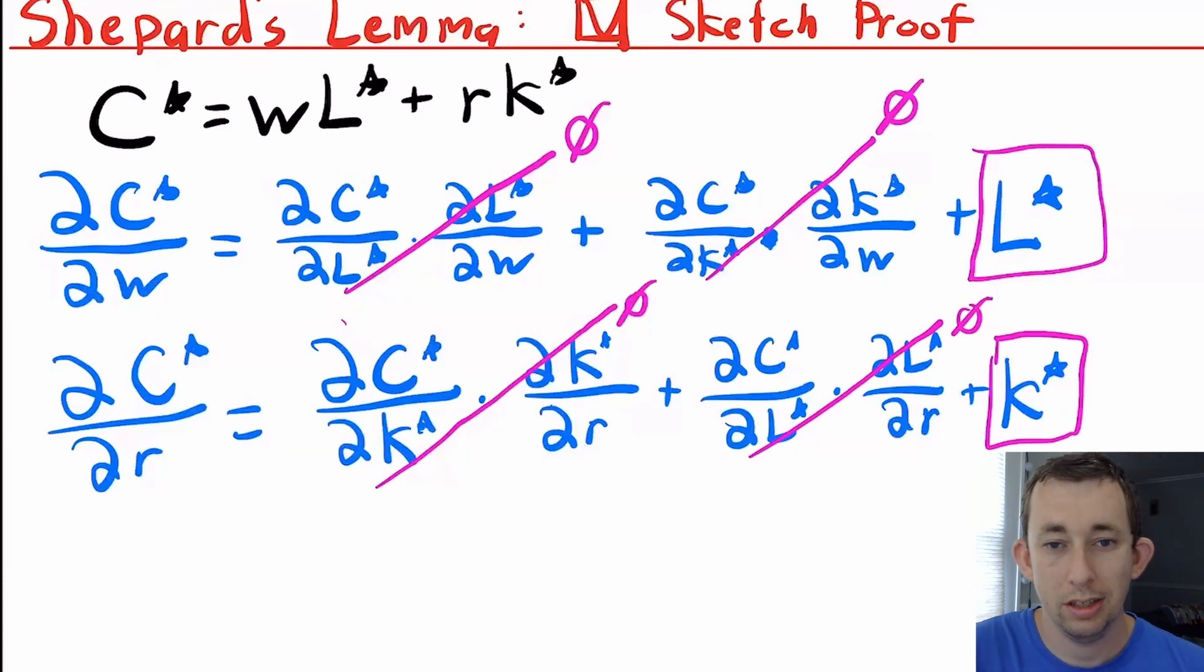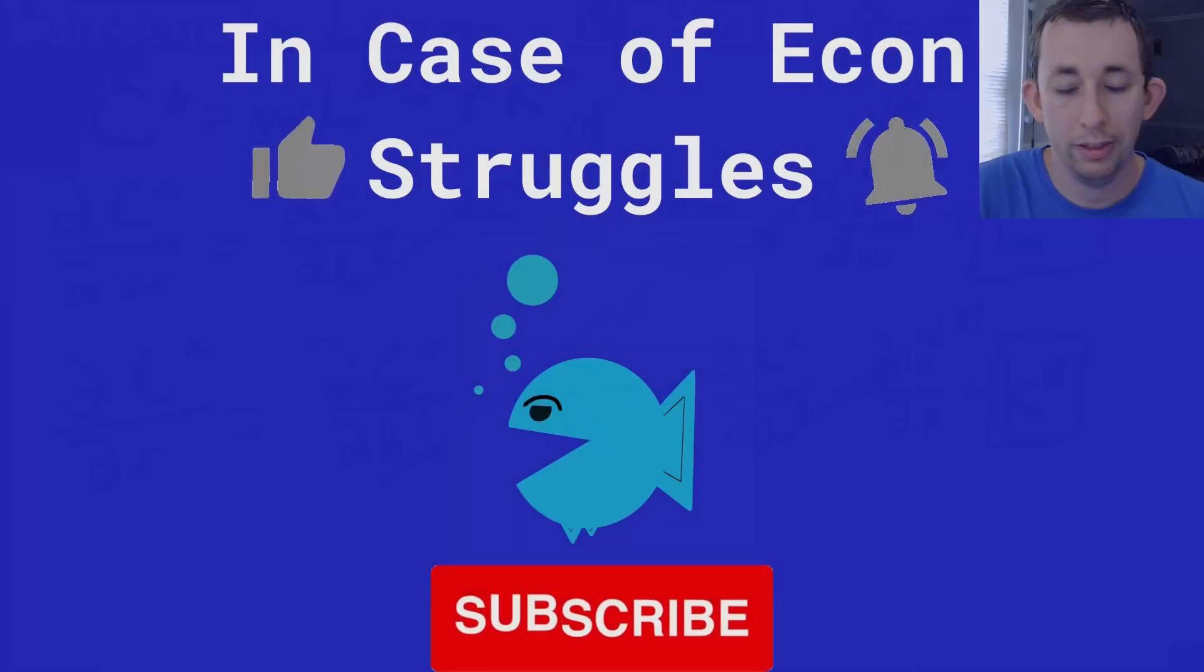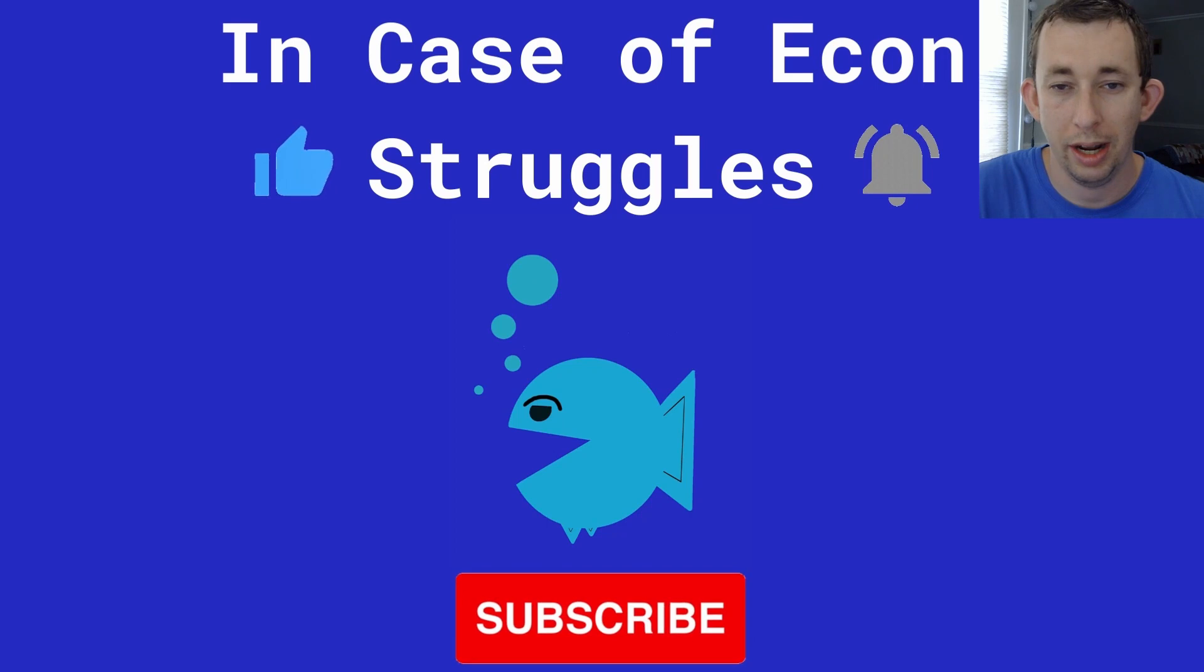So again, this is just a quick sketch proof of Shepard's Lemma and the envelope theorem for production, the cost minimization problem. If this was helpful, make sure to like and subscribe. We will see you next time for another case of econ struggles.